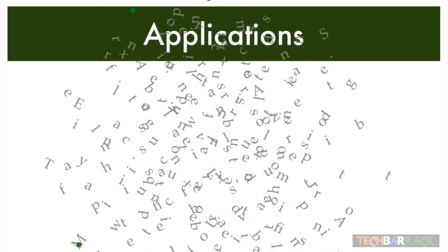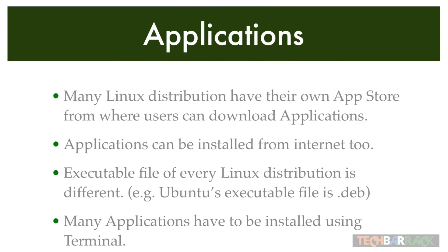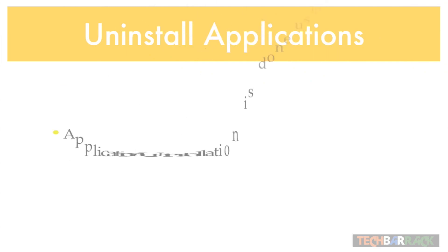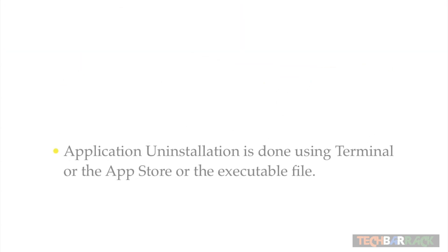What about applications — how do you install them? Many Linux distributions have their own app store, just like the Mac App Store, and users can download applications from there. Applications can also be installed from the internet. The executable file format differs per distribution — Ubuntu's executable file is .deb, so you can install applications using the .deb executable file. Application uninstalling is done using the terminal, the app store, or the executable file itself.